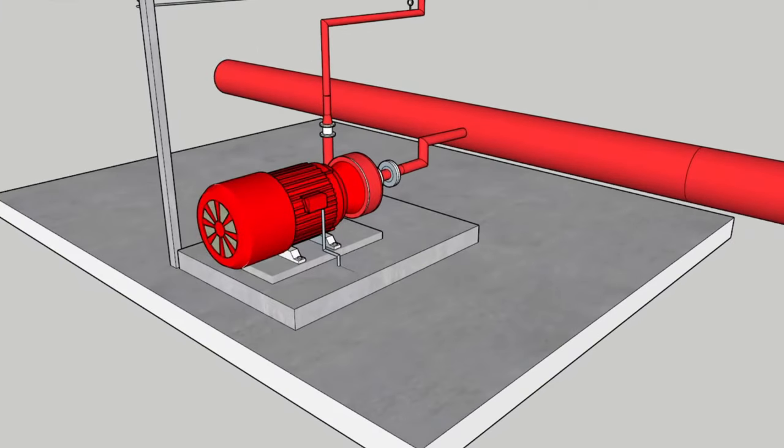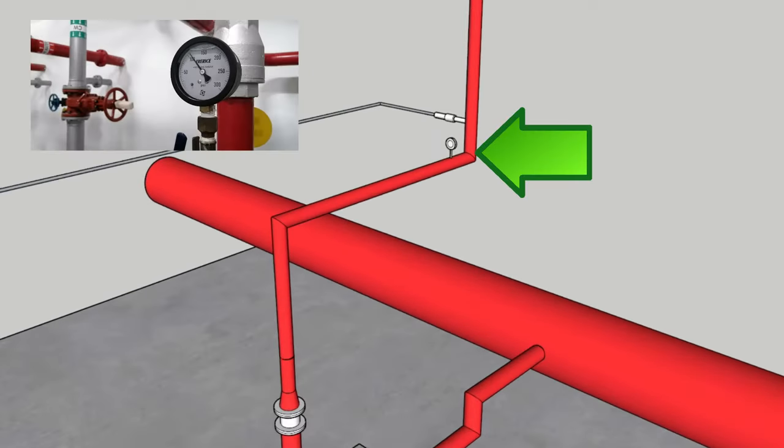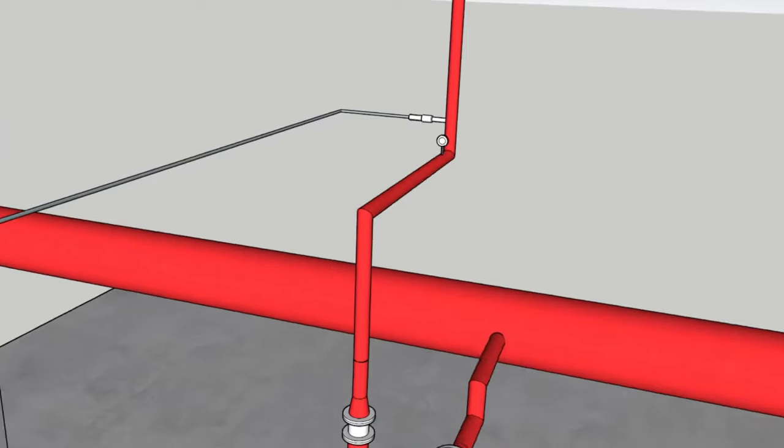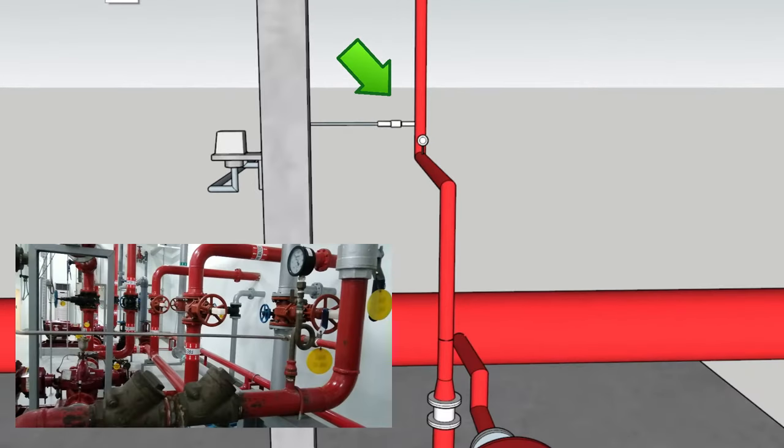In the jockey pump pipeline, a pressure gauge is installed to monitor the pressure value of the system. Right after the pressure gauge, a small pipeline is tapped to the main line for the pressure switch.